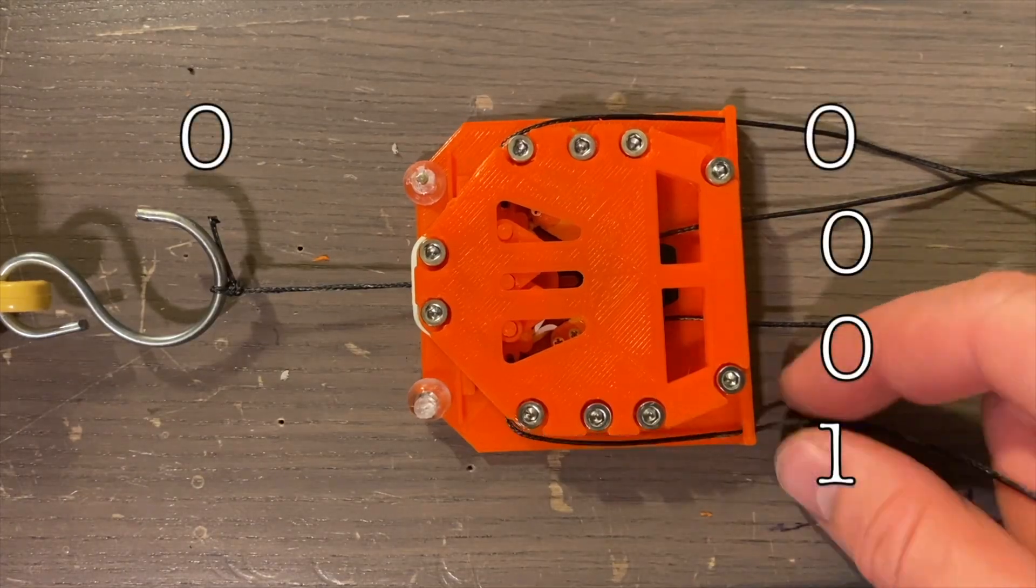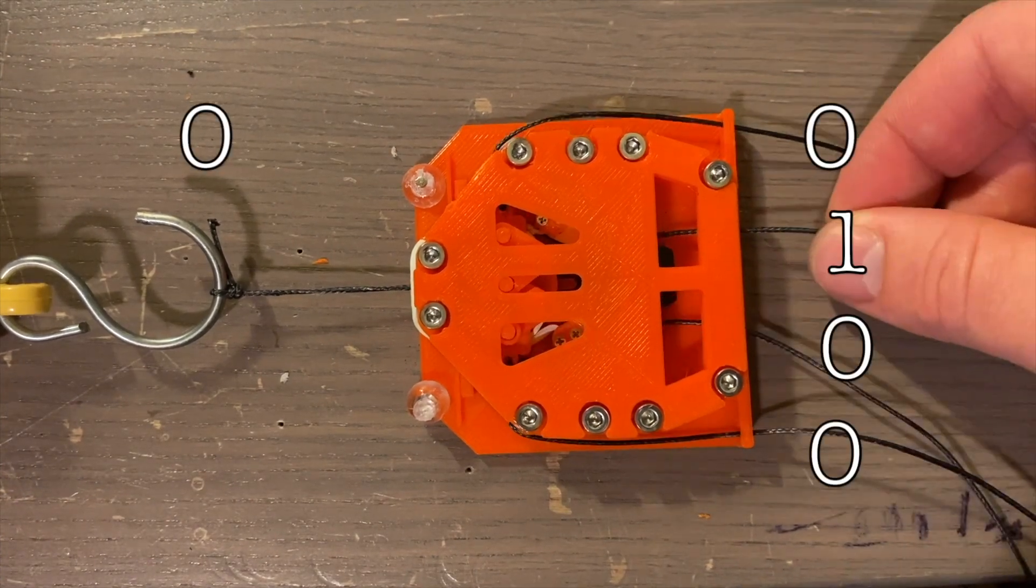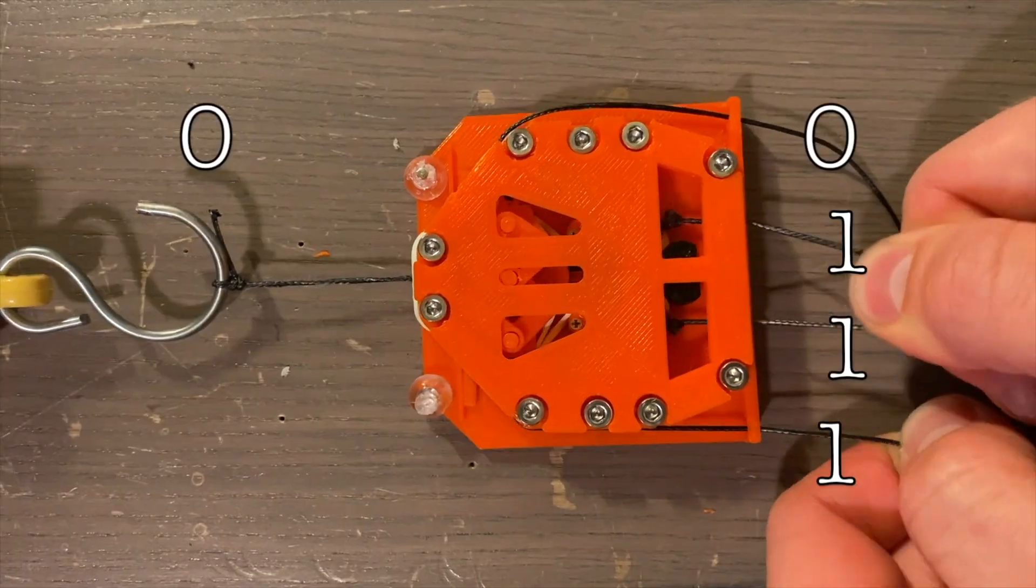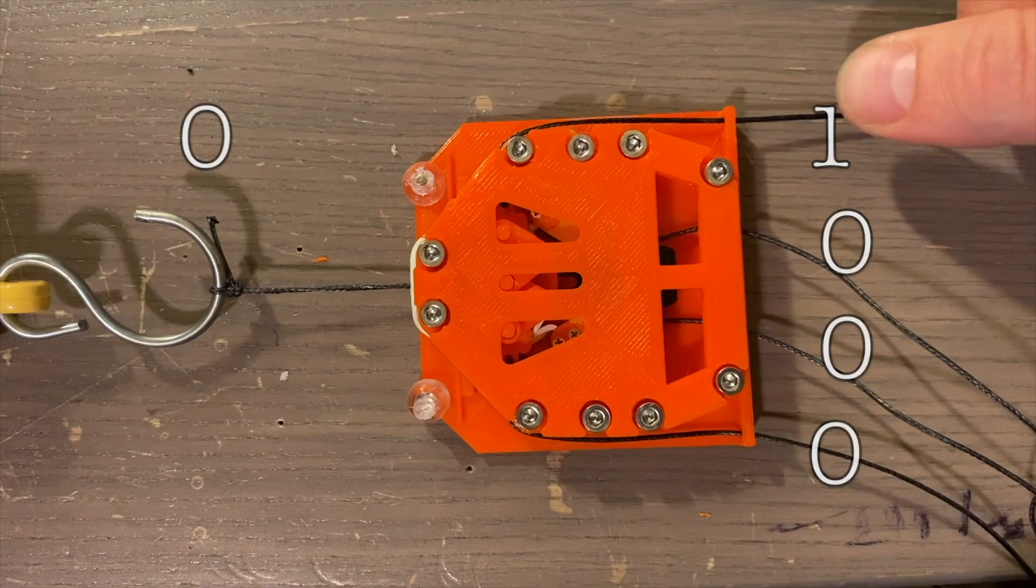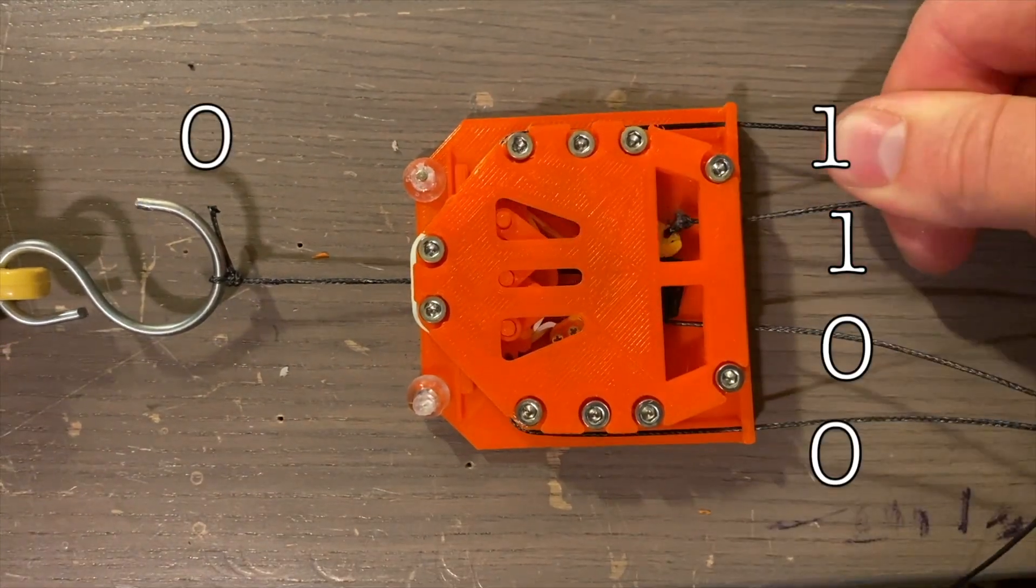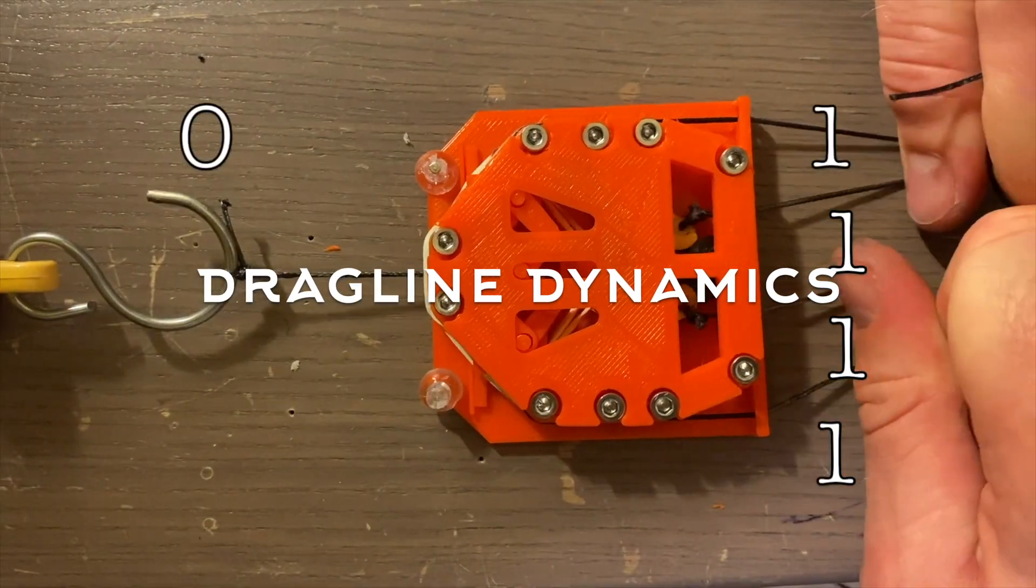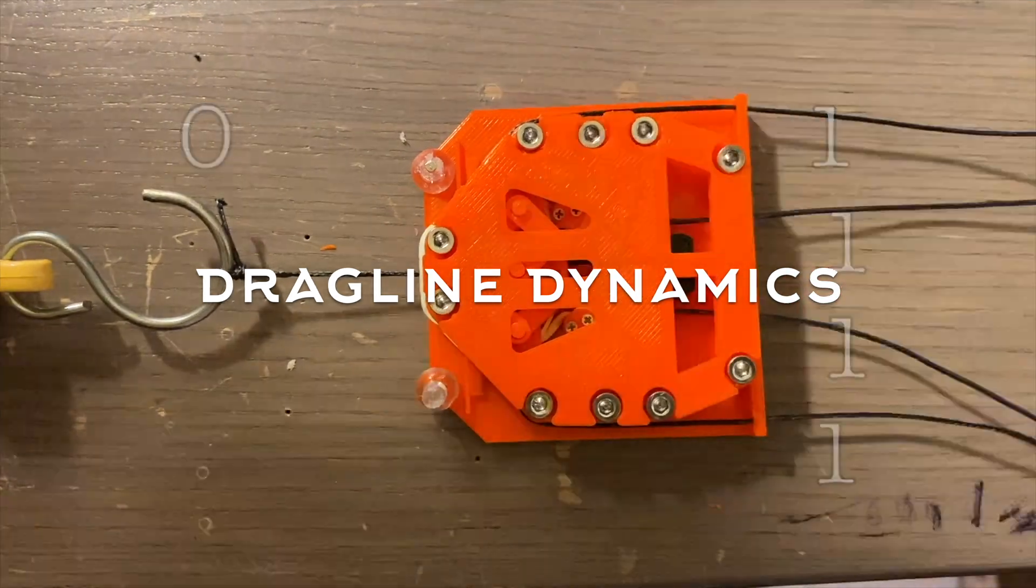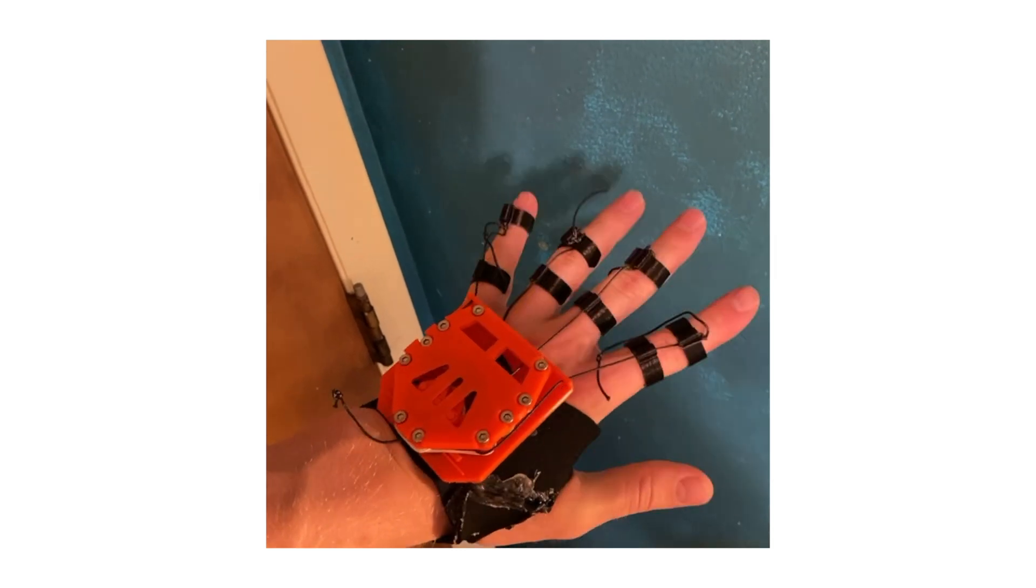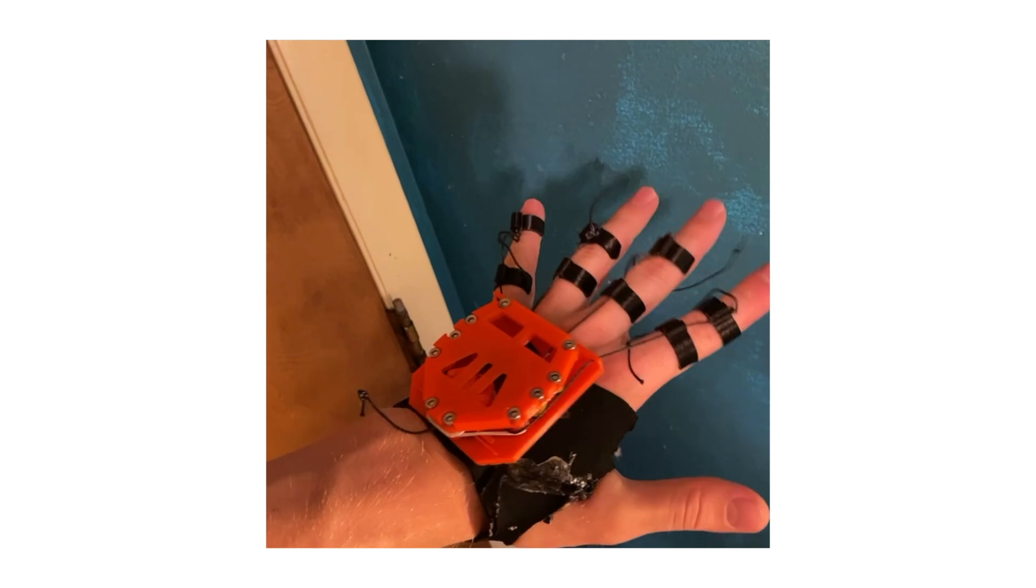This design works pretty well, even if it does have some slop from the imprecise manufacturing of FDM 3D printing. This could easily be cleaned up by the better machines I plan on purchasing for Dragline Dynamics, which is the non-profit laboratory I'm starting in the fall, where I and others will be working on solutions to make web shooters and other gadgets better than ever. Mounting this trigger on my hand, we can see how it's supposed to work. The output is only actuated by the desired spidey hand configuration.